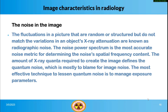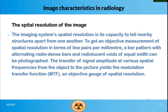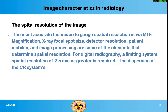The most effective technique to lessen quantum noise is to manage exposure parameters. The imaging system's spatial resolution is its capacity to tell nearby structures apart from one another. To get an objective measurement of spatial resolution in terms of line pairs per mm, a bar pattern with alternating radiodense bars and radiolucent voids of equal width can be photographed. The transfer of signal amplitude at various spatial frequencies from the object to the picture yields the Modulation Transfer Function (MTF), an objective gauge of spatial resolution.